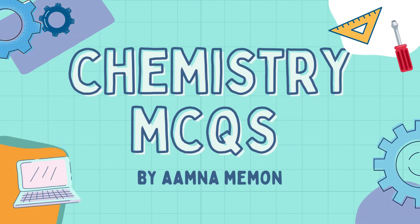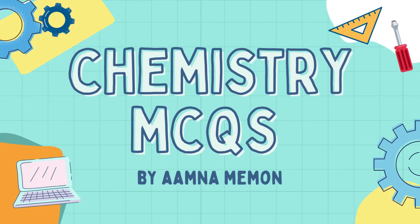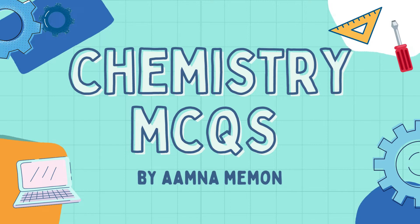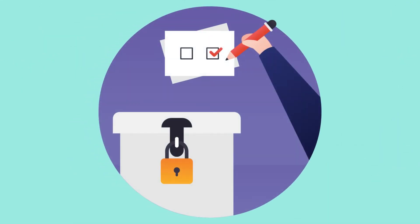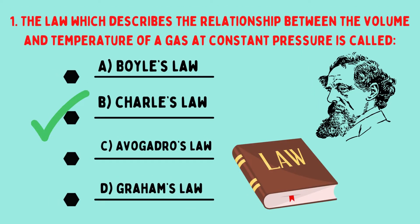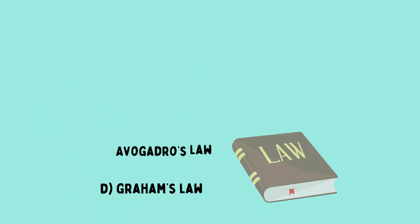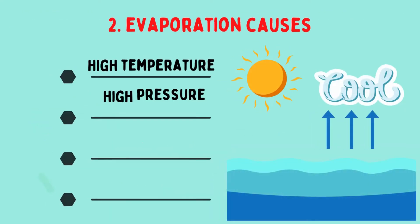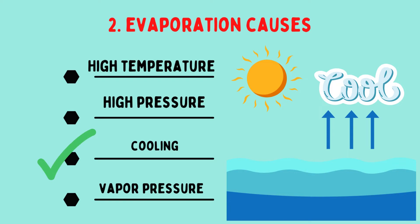Welcome back, my name is Amna, and in this video I'm going to talk about the most repeated chemistry MCQs. The first one: the law which describes the relationship between the volume and temperature of a gas at constant pressure is called Charles's Law. Evaporation causes cooling.